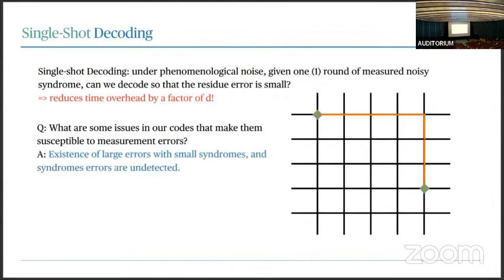There are really two issues stopping the toric code from being single shot. First, there exist very large errors with very small syndrome. Second, there are very easy ways to flip syndromes without being detected by the code — when the code sees two syndromes on the surface, it just says 'this is a valid syndrome' and does decoding as usual, treating the measurement error as undetected. These two issues are what require d rounds of repeated syndrome extraction.